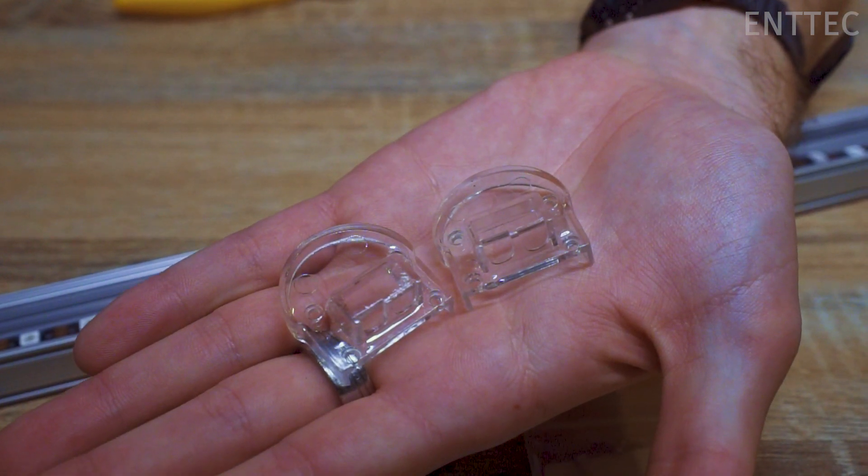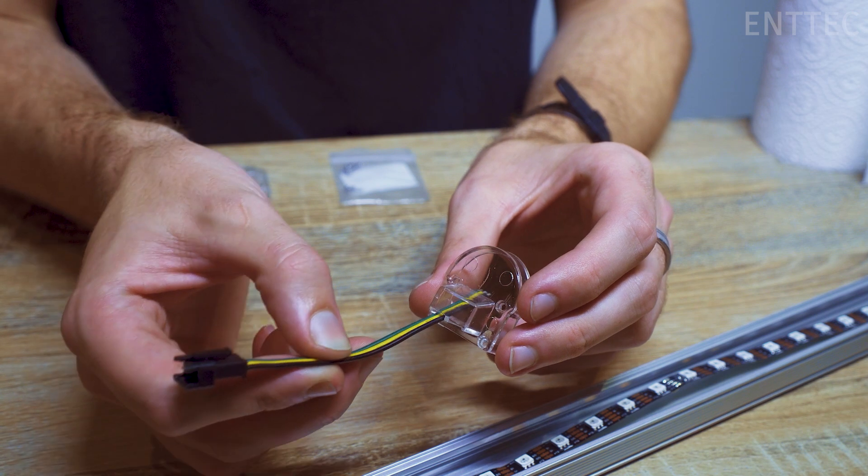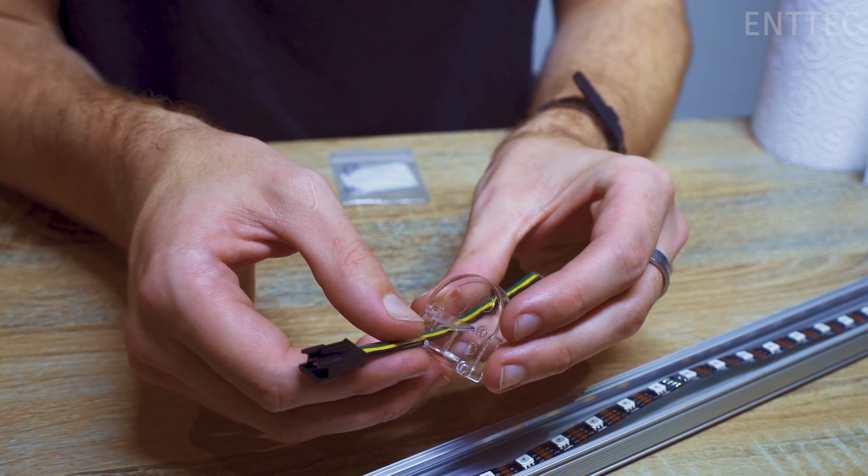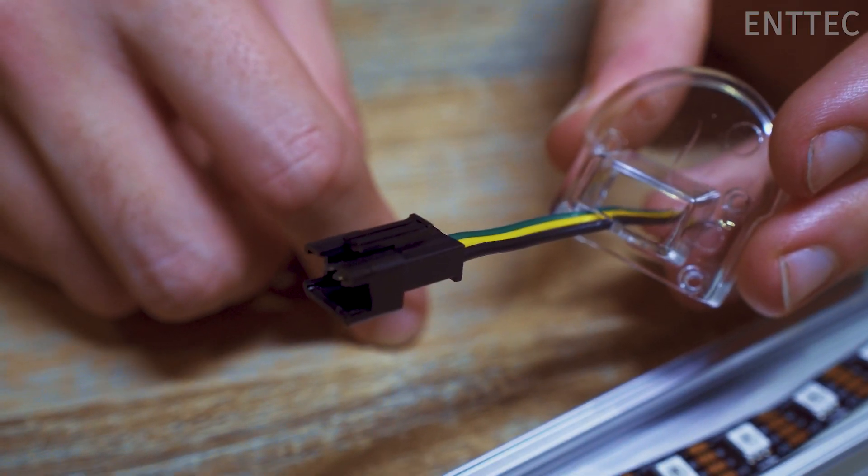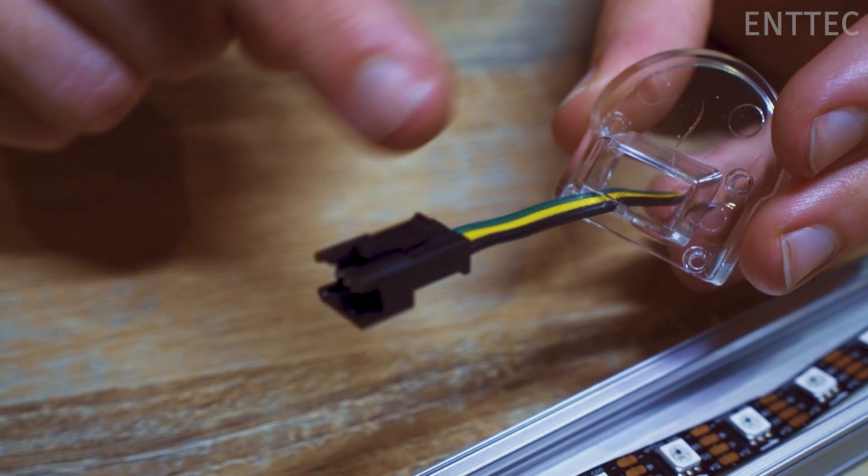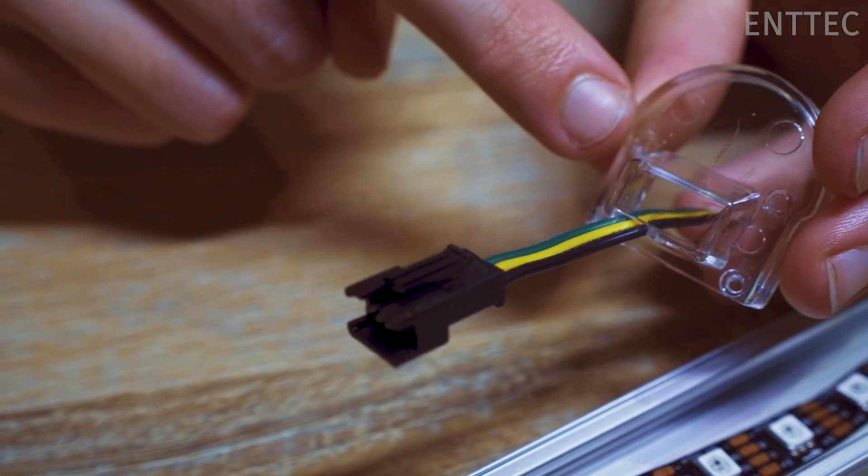If you need to strip and tin the wires on your connectors, do so now. Then, thread your prepared wires through the hole in your end cap prior to soldering your LED tape. Make sure the connector head is on the same side as the outer face of the end cap.